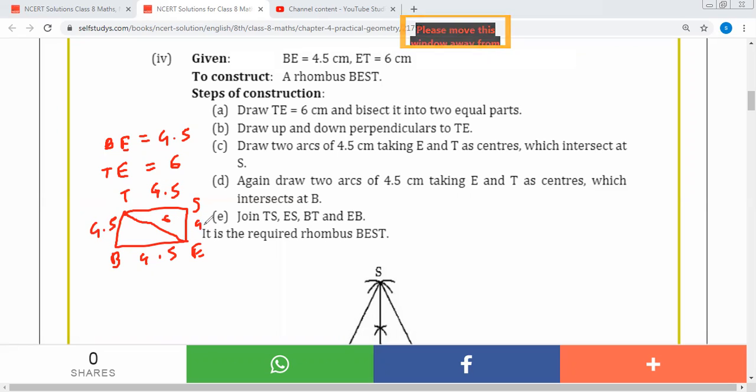So what should we do first? Take out BE as 4.5 cm. Put 4.5 on the compass and draw an arc. Then from E, draw another arc. Join T to B and T to E. This side is 6 cm and this is 4.5 cm.